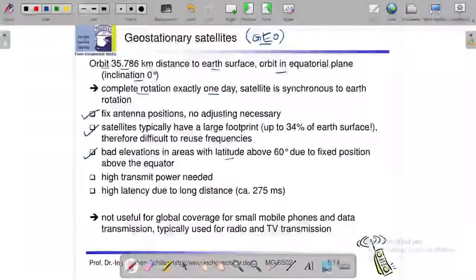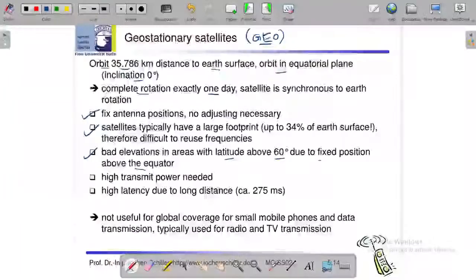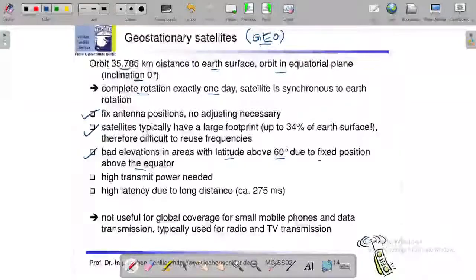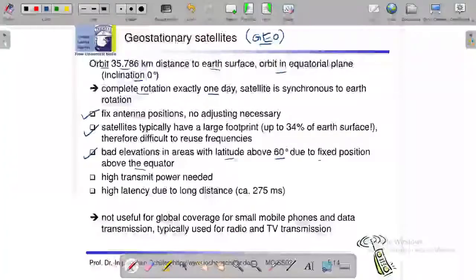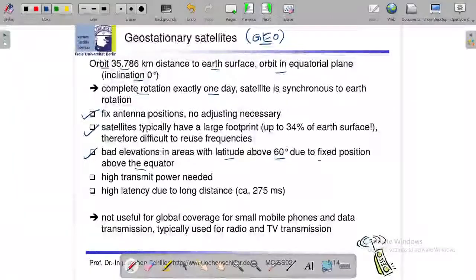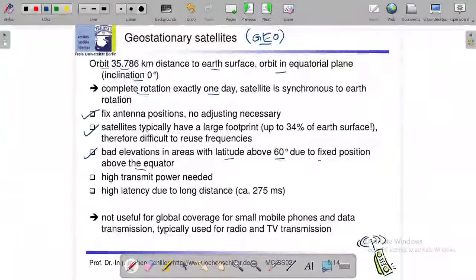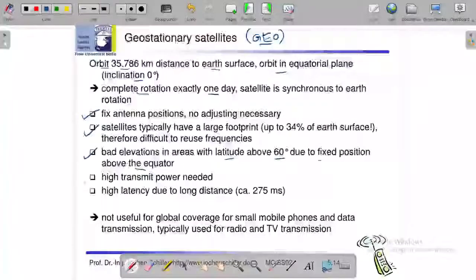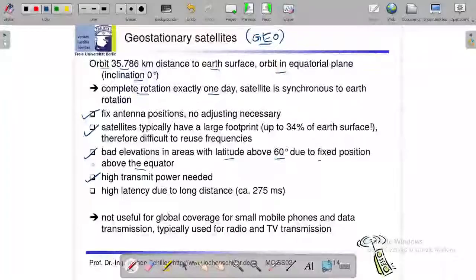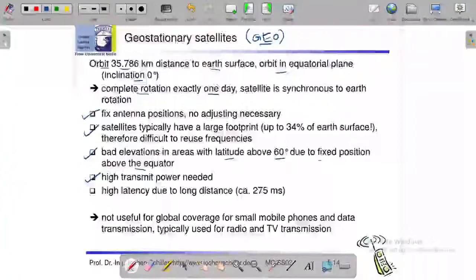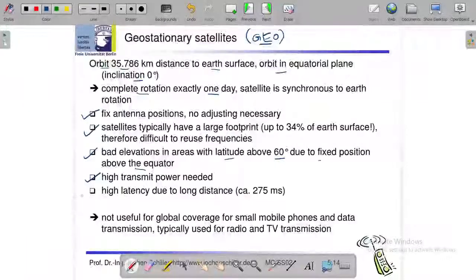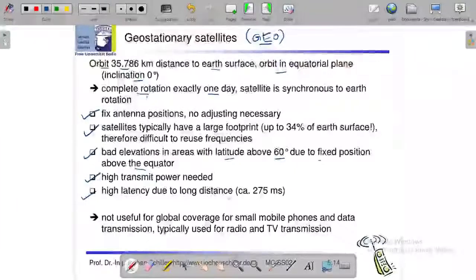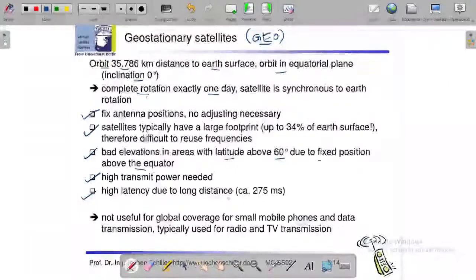Is bad elevation in area with altitude above 60 degree due to fixed position about the equator. This is not fixed position, that is the problem comes in case we have latitude above 60 degree, we have elevations correct to keep the distance. Distance high, latency due to long distance. That is data transmission latency. This is one of the disadvantages.